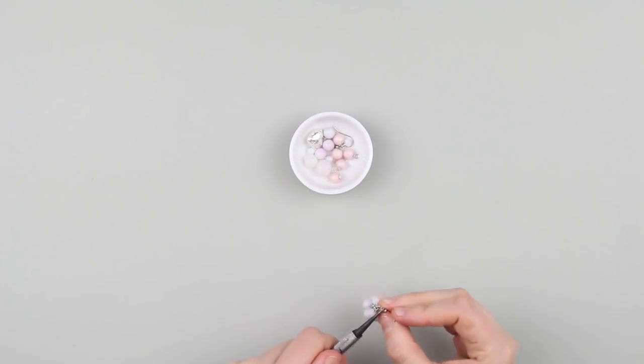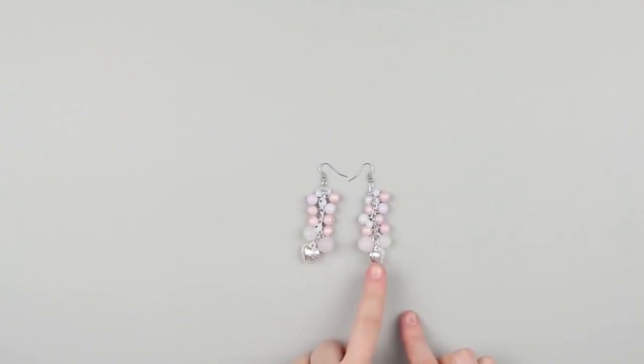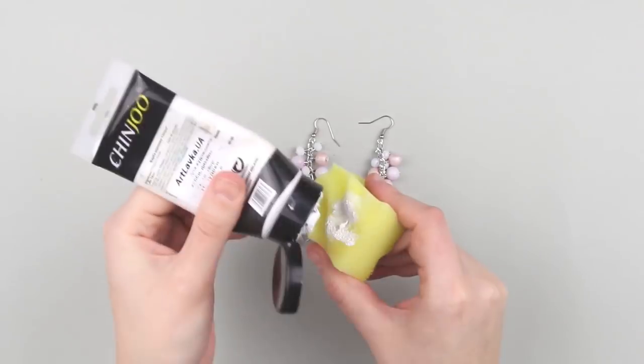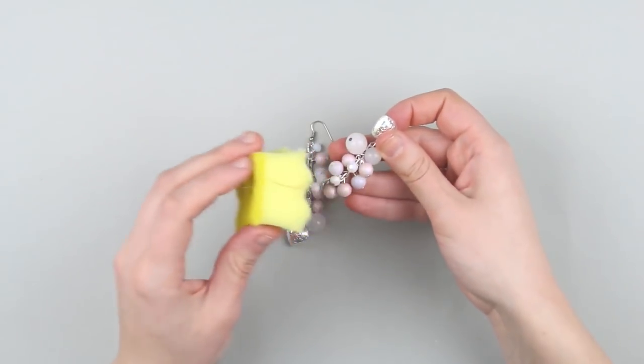Secure a clasp on the last chain link from the other side. Make the other earring in the same way. Add some touches of acrylic paint around the edge to make the earrings have a winter look.